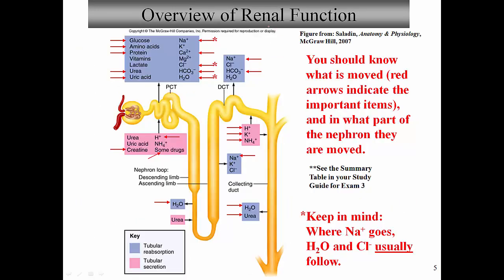Next, let's get a graphical overview of nephron and collecting duct function. There's also a tabular form later in the presentation as a review. In this graphical summary, boxes color-coded in blue indicate tubular reabsorption, and boxes in pink indicate tubular secretion. Items inside the boxes are either being reabsorbed or secreted. Let's begin with the proximal convoluted tubule — about 65% of all reabsorption that occurs in the nephron happens here. The bulk of tubular reabsorption occurs in the PCT.